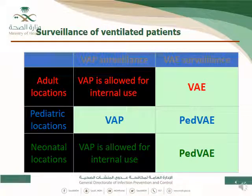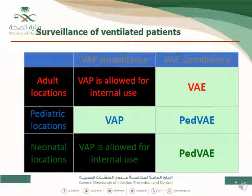This slide shows how we can use VAE and Pediatric VAE. VAE is used for adult locations and Pediatric VAE is used for pediatric and neonatal locations. VAE surveillance is still available in pediatric populations. But for adult and neonatal locations, if you want to do VAP, you should do it only for internal use or internal benchmarking, not for external use.